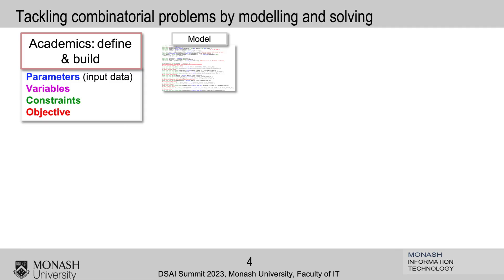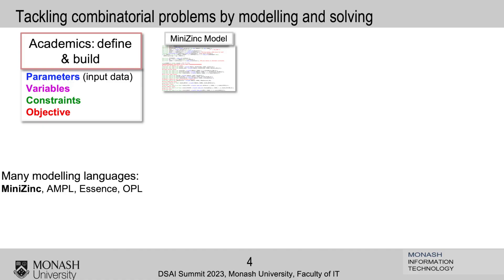This model looks very much like a program, with its parameters, its constraints — for all X do this, and this has to be true, et cetera. There could be many modeling languages: MiniZinc, AMPL, and so on, but we use MiniZinc because that's what we do in our group. We also parameterize or format the data, and the combination of the model and the data gives us an instance.